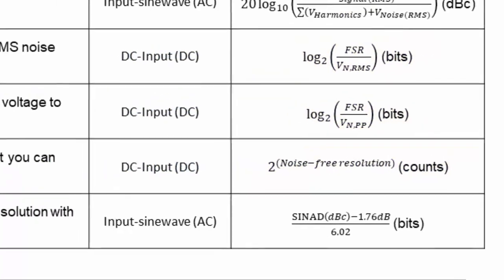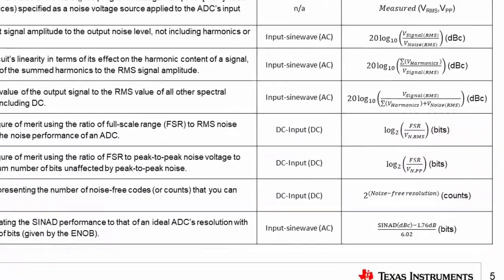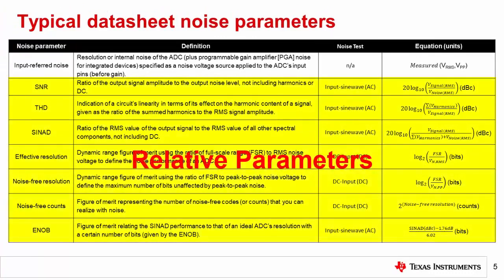An important characteristic of all the calculated parameters highlighted here is that they involve some ratio of values. These are referred to as relative parameters. As the name implies, these parameters provide a noise performance metric relative to some absolute value, usually the input signal or the full-scale range. The next few slides will examine this concept in more detail.